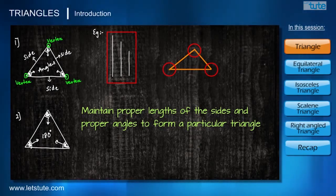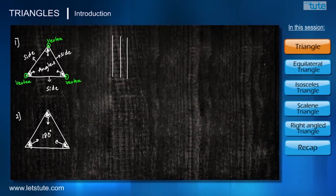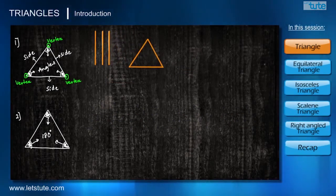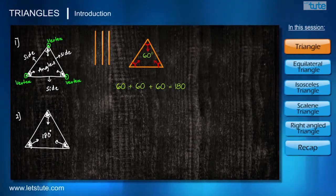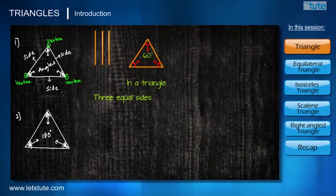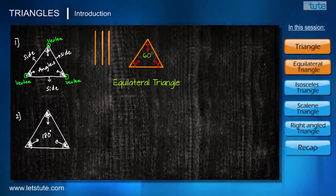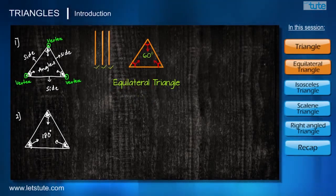Let's play with this property by taking different possibilities. This time, let me take three equal line segments and try to form a triangle. When three equal line segments come together to form a triangle, they must make three equal angles — each angle has to be 60 degrees, because the sum of three angles is always 180 degrees. We can conclude that whenever three sides are equal in a triangle, the three angles formed will also be equal. Such triangles are called equilateral triangles — 'equi' means equal, 'lateral' means sides.